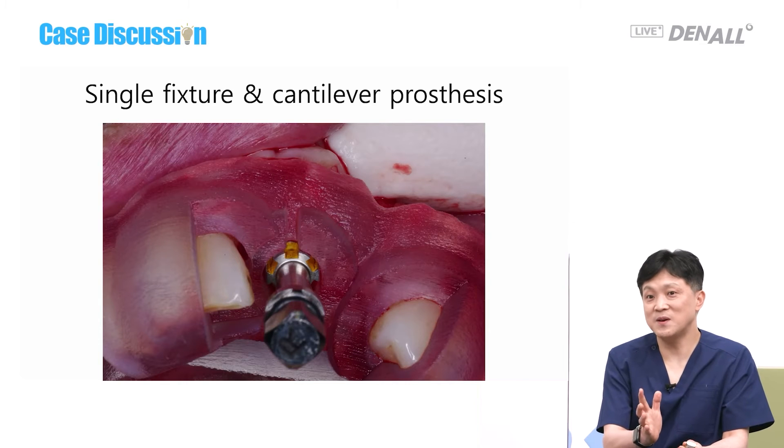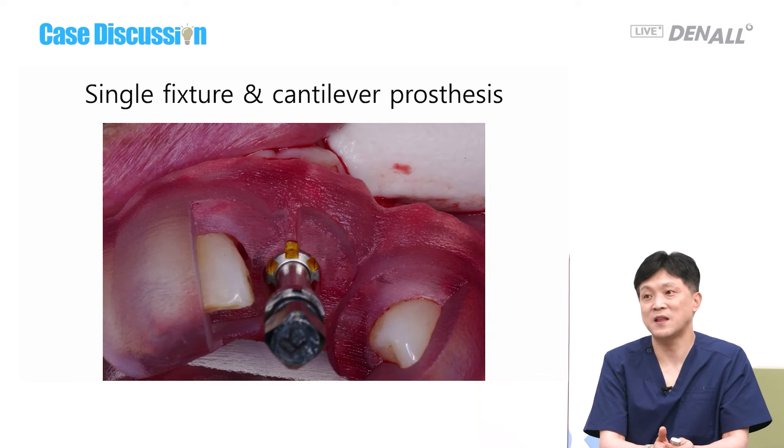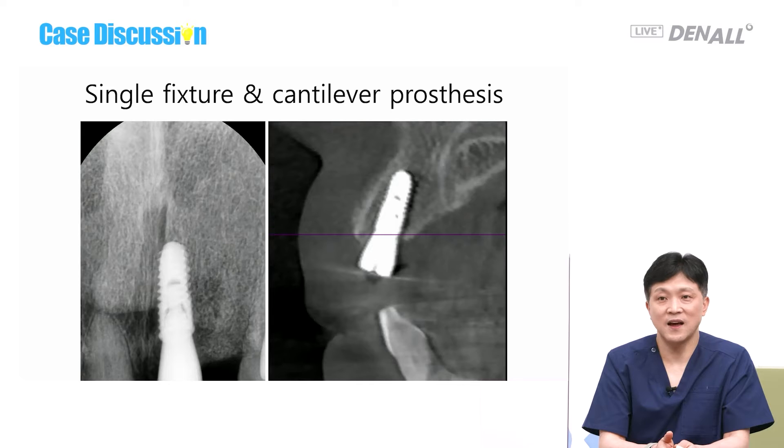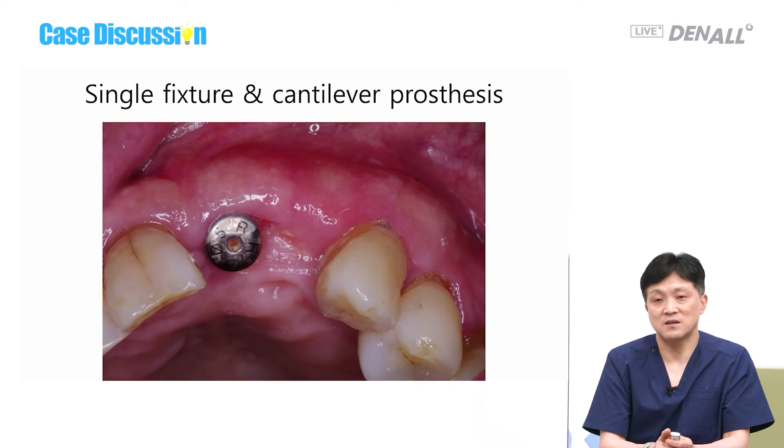One implant is placed at 11. If you look at the angles, at number 12 an implant cannot be placed — it is prosthodontically very difficult. So only one is placed at 11, and the prosthesis is yet to be delivered. Distal cantilever is favorable in the maxillary anterior region, and placing one implant with a cantilever can be a good option.